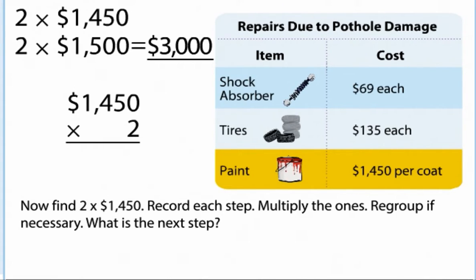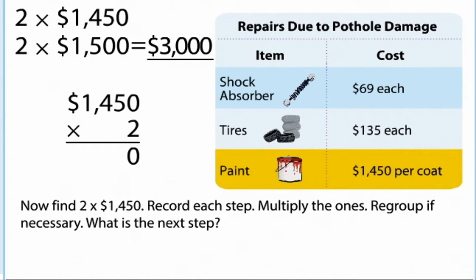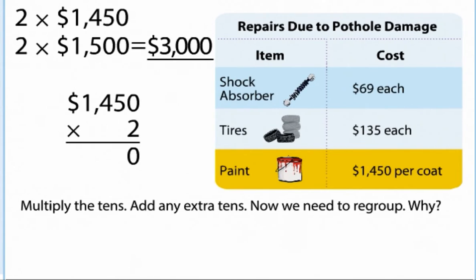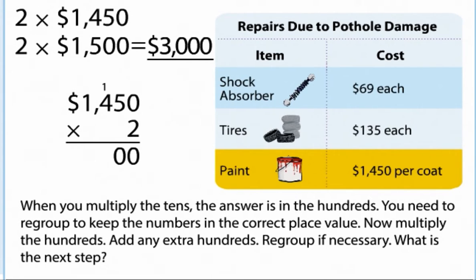Now find 2 times $1,450. Record each step. Multiply the ones. Regroup if necessary. What is the next step? Multiply the tens. Add any extra tens. Now we need to regroup. When you multiply the tens, the answer is in the hundreds. You need to regroup to keep the numbers in the correct place value.